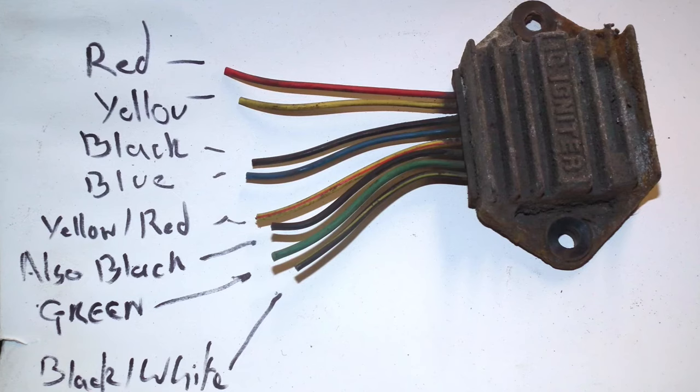Then a black and yellow, a yellow and red, another black, and a green. It's a Kawasaki, so the black and yellow is a ground, the yellow and red is the same color as the wires on the engine kill switch, so that's the power. The green wire is one of the coils and the other black is the other coil.